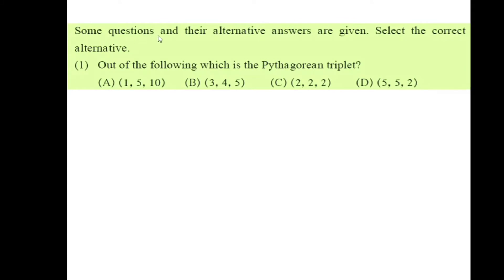Some questions and their alternative answers are given. Select the correct alternative. The first question is: out of the following, which is the Pythagorean triplet? Four alternatives A, B, C and D are given, each with a group of three numbers, and we have to decide which is a Pythagorean triplet. To solve this, we must use the concept: if the square of the largest number equals the sum of squares of the remaining two, the group is a Pythagorean triplet.